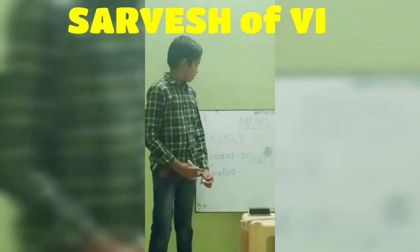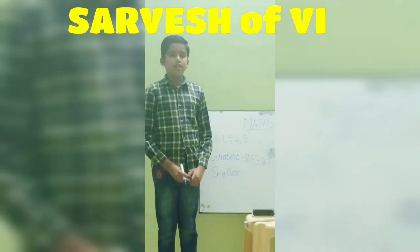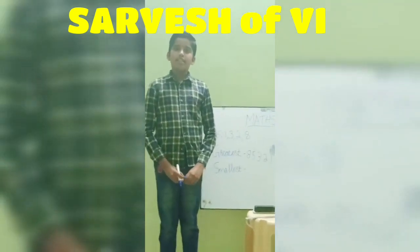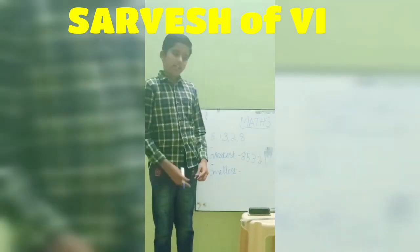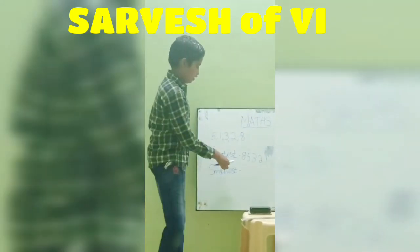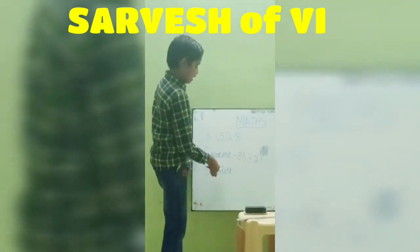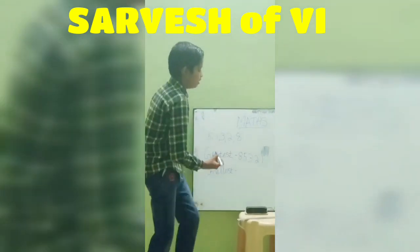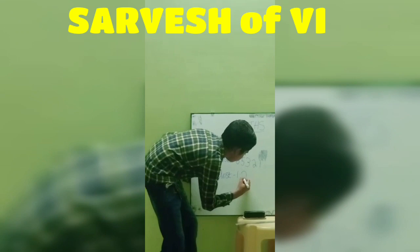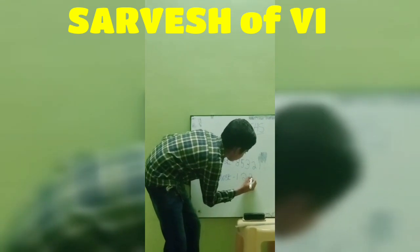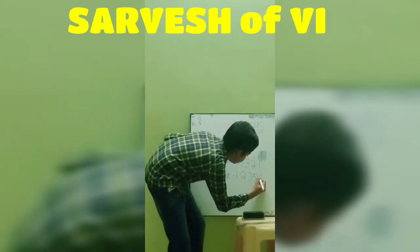Now, we can form the smallest number. There is an easy way to form the smallest number. That is, if we write the greatest number backwards, we will get the smallest number. So: 1, 2, 3, 5, 8. The smallest number is 12358.